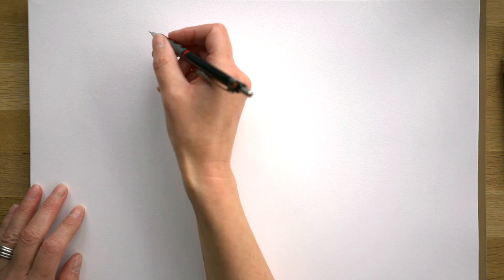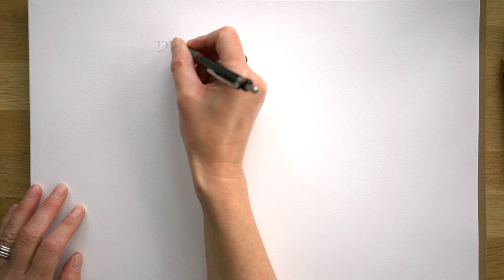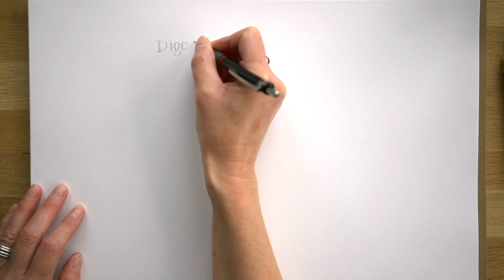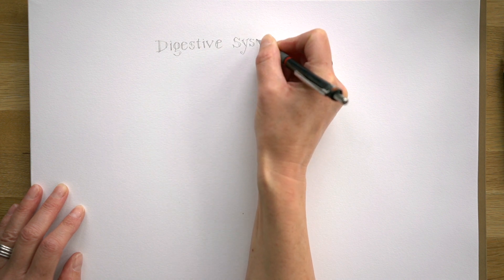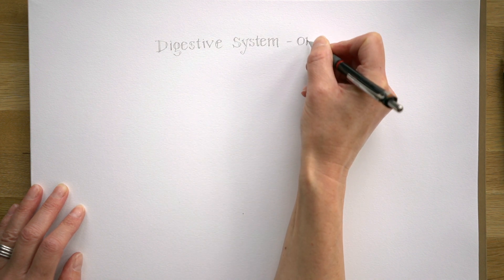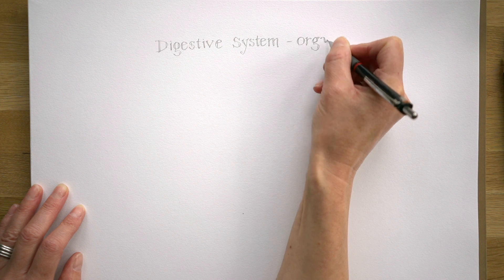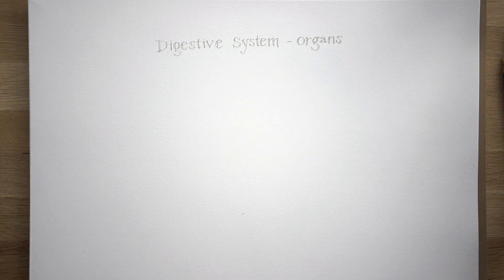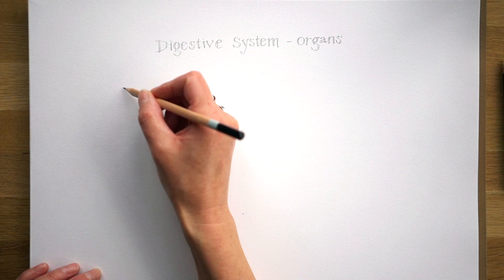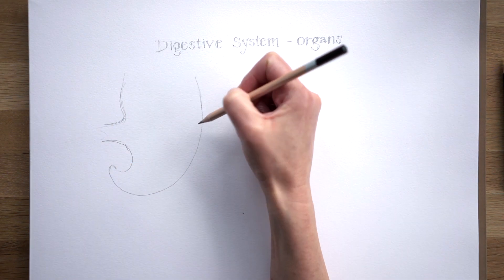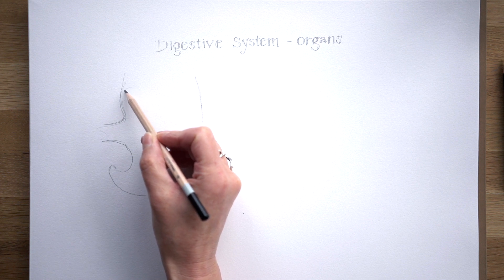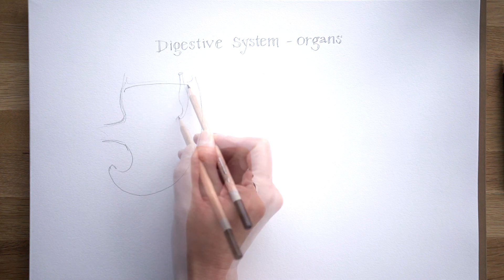Time for some more Lockdown Embryology with me, Alice Roberts. We're staying with the digestive system in this video, but looking in detail at some of the organs that develop in the abdomen. Most of them are organs of the digestive system, but one of them isn't, although it's closely related to them anatomically.